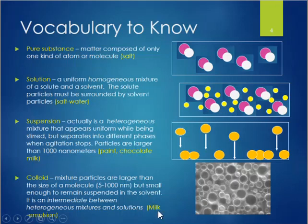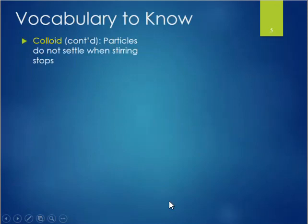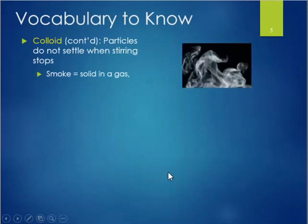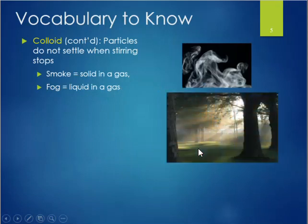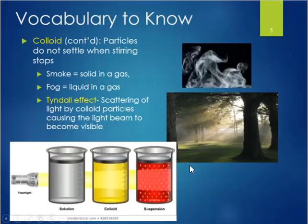Milk is classified as a type of colloid known as an emulsion. In colloids, the particles don't settle when stirring stops — they remain suspended. There are different types of colloids besides emulsions. Smoke is classified as an aerosol, where solid particles are suspended in gas. Fog is another type of aerosol, where liquid is suspended in a gas. One distinguishing characteristic of colloids is that they exhibit what's called the Tyndall effect — a scattering of light by colloid particles causing the light beam to become visible.